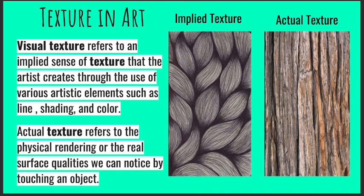In art, implied texture looks like you could run your hand over it and feel it, but it's a trick. The artist drew it to look textured, but it would actually just be a flat piece of paper. They used movement and value — darks and lights — to make it look like the texture is popping off the paper. Actual texture, like tree bark, you can genuinely feel.